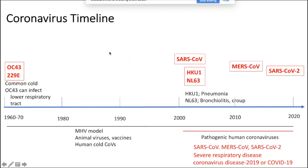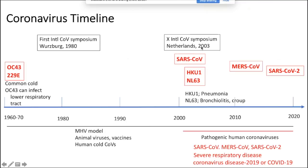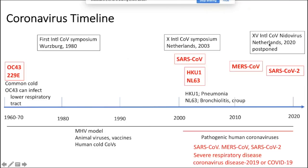For a bit more history: the first international coronavirus meeting was held in Würzburg, Germany in 1980. The next notable meeting was in 2003 in Egmont aan Zee in the Netherlands, organized just after the emergence of SARS and held earlier than scheduled because of the SARS epidemic. This year, the 15th international coronavirus meeting was supposed to meet in the same place as the 2003 meeting, but it was postponed from its planned date in May.